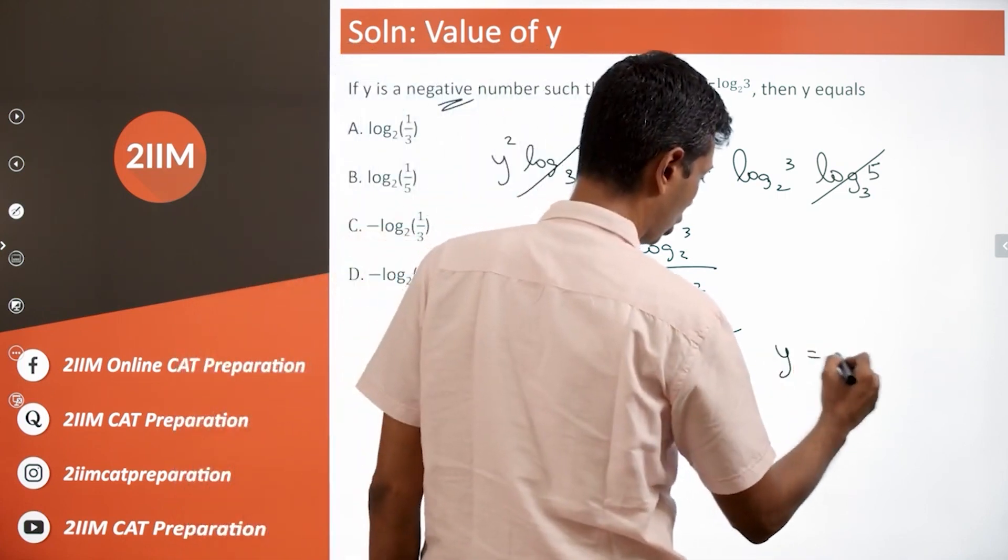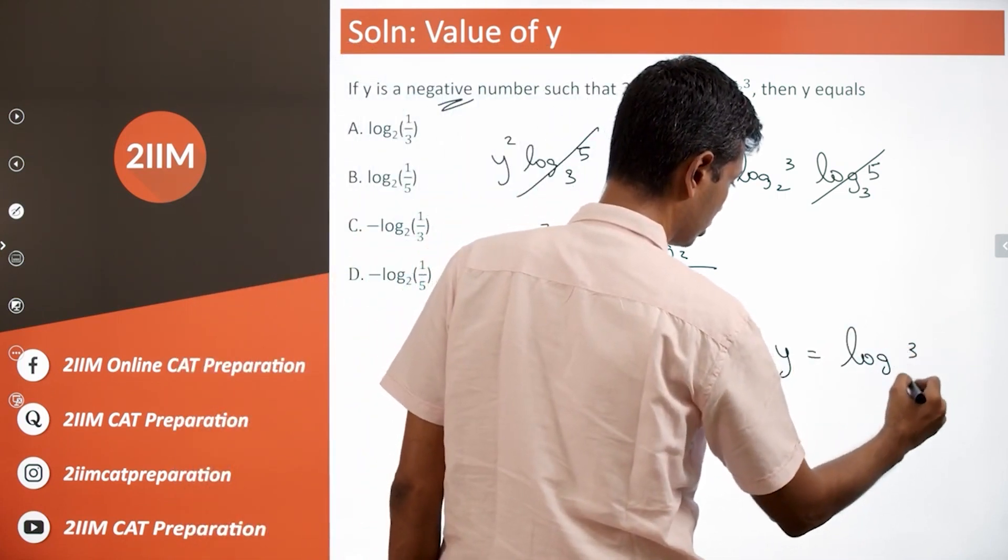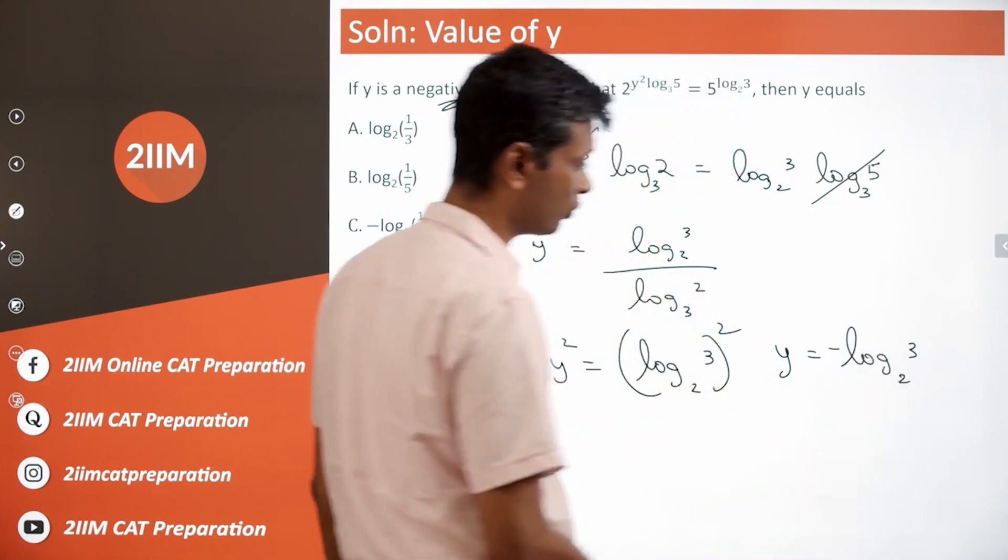Y is not log 3 to the base 2. It is log 3 to the base 2 times minus 1, minus of log 3 to the base 2.